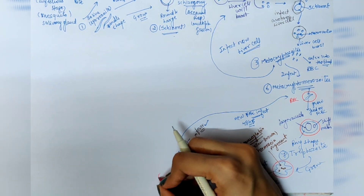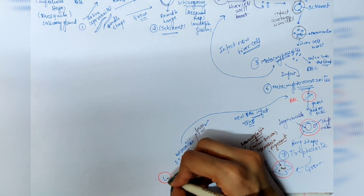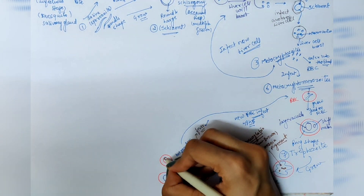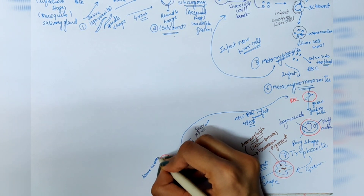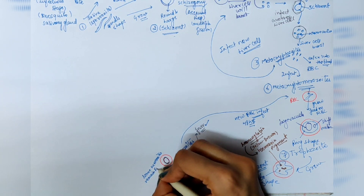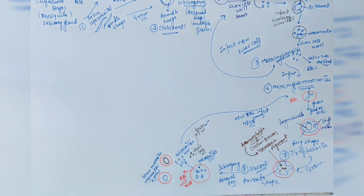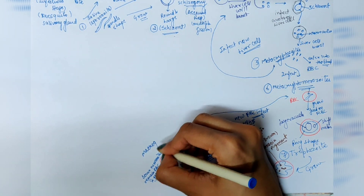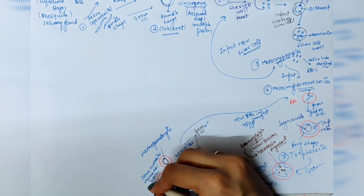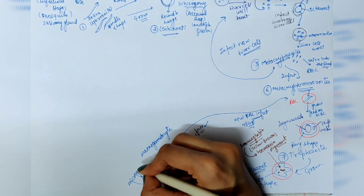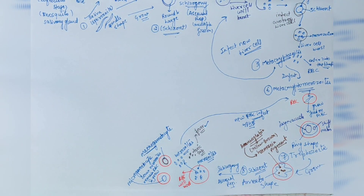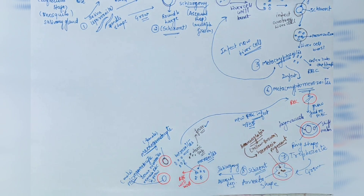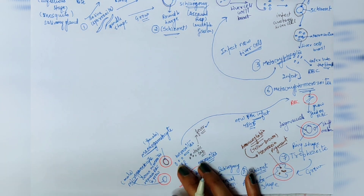In some conditions, some merozoites will remain inside the RBC and grow. These will become two types of gametocytes: one is macrogametocyte, which represents the female, and one is microgametocyte, which represents the male.